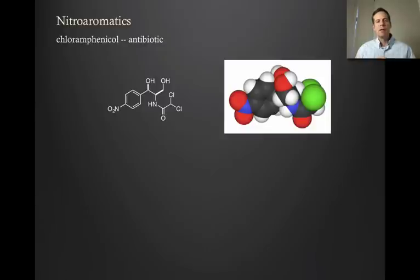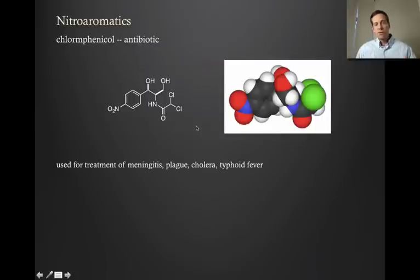Just one other circumstance where we find a nitroaromatic: this is a very important antibiotic called chloramphenicol. You can see the nitro group right here. This is just a molecular model of this molecule, and that is the nitro group right there with the nitrogen attached to two oxygens. Chloramphenicol is used to treat some pretty nasty bacterial infections, including meningitis, plague, cholera, and typhoid fever.